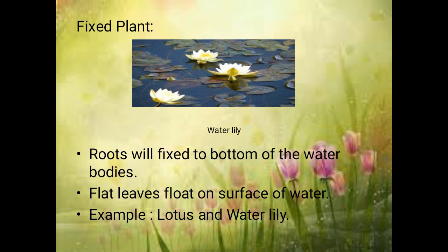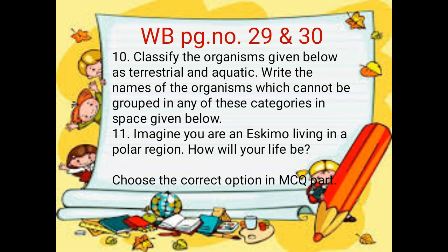So these are the topics we have discussed. Note your today's homework: take your workbook, page number 29 and 30. In the 10th question, classify the organisms given below as terrestrial and aquatic. You have to classify which organism is a terrestrial organism and which is an aquatic organism, and write the names of organisms that cannot be grouped in any of these categories in the space given below.